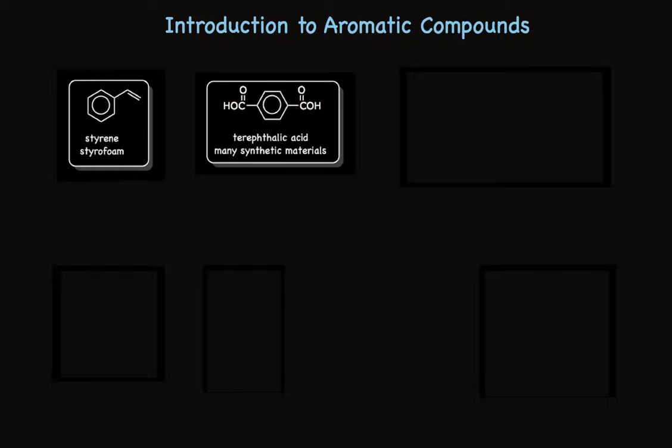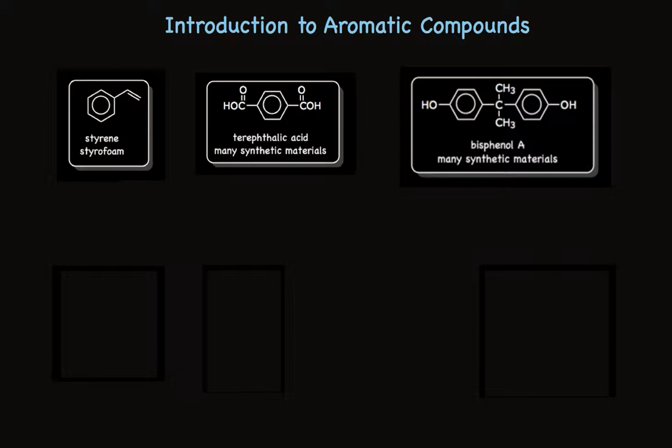Terephthalic acid is a benzene ring with two carboxylic acid groups attached to it. And, along with bisphenol A, is a compound that's used to make many synthetic materials that are made up of very long chains. Styrene, terephthalic acid, bisphenol A, all ultimately are derived from petroleum.